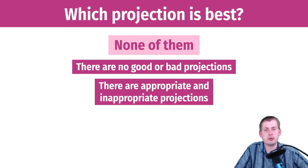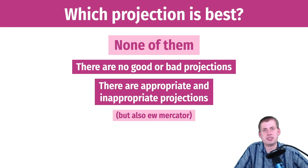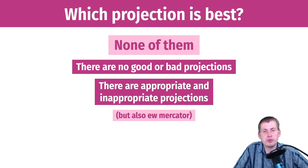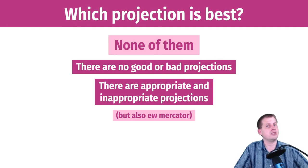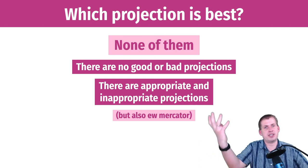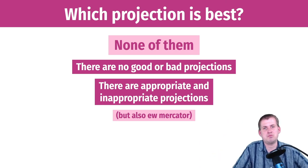There are no inherently good or bad projections — just appropriate and inappropriate ones for your situation. Except Mercator, which is pretty much always a bad projection. Those are the main guidelines for telling the truth with data using maps: don't lie, pay attention to how you're mapping aesthetics, and choose projections that don't distort the truth. Don't over-inflate Europe when comparing it to the size of Africa. Now you're more equipped to tell the truth with maps.